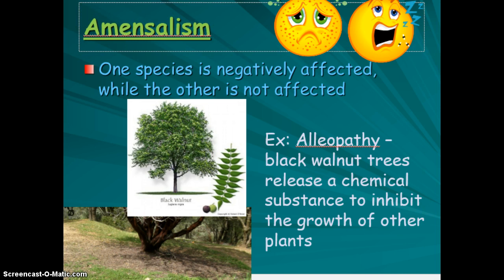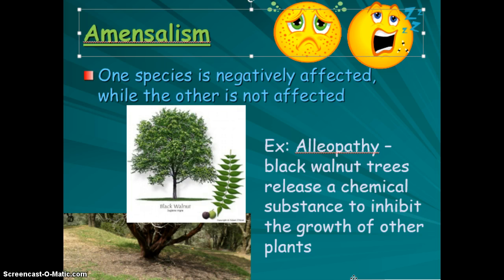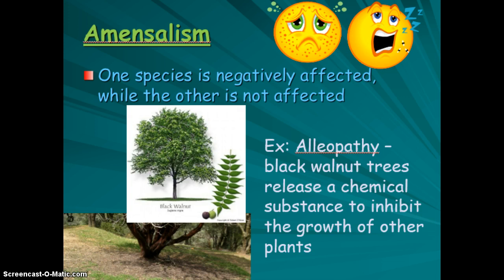Another example is amensalism, where one species is negatively affected while the other is not affected at all. A specific example is allelopathy — black walnut trees release a chemical that inhibits the growth of other plants, harming them but not harming the black walnut. Amensalism in general means a negative effect to one organism while the other is unaffected, or might even be slightly benefited.